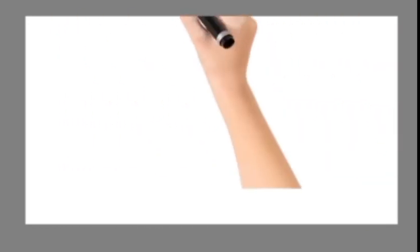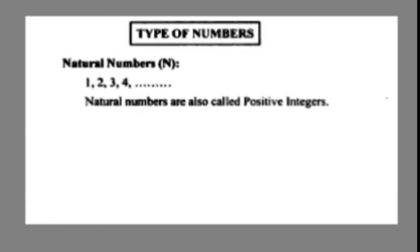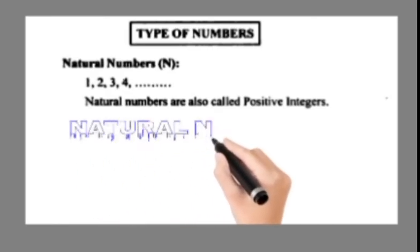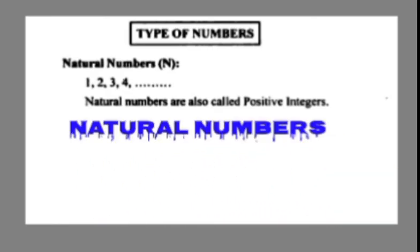Now see here, Natural Numbers. Natural numbers are also called positive integers: 1, 2, 3, 4, and so on. These are called natural numbers. All natural numbers are positive.